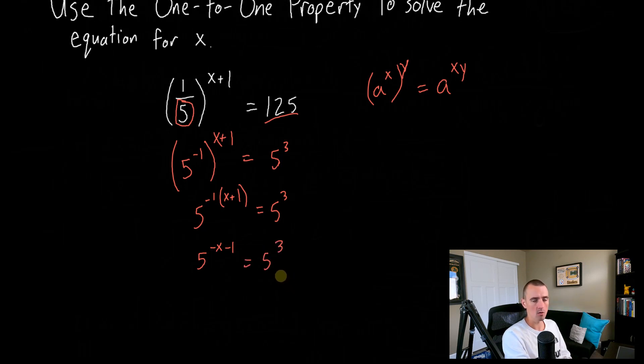And now we can use the one-to-one property because we have the same base on both sides of our equation raised up to two different powers. So we can just set the powers equal to each other. So we can say negative x minus one equals three.